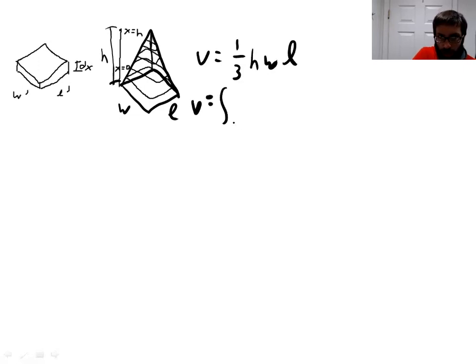And so at this point, we can actually write an expression using calculus to say what our volume is. It's going to be the integral from 0 to h. We're going from 0 to h, and the volume of each one of these rectangular prisms is going to be W' times L' times dx.